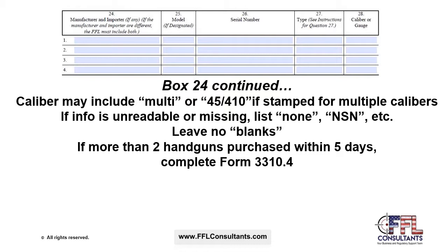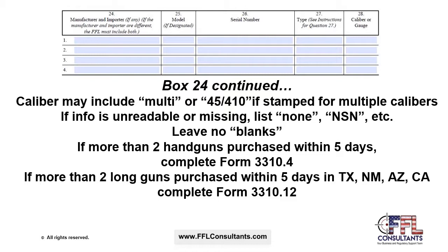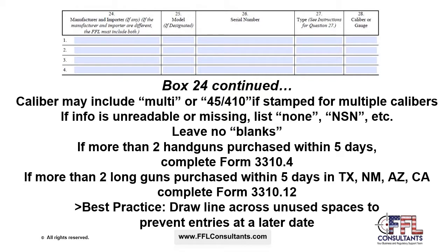If more than two handguns are being purchased across any five consecutive business days by the same individual, FFLs are required to complete Form 3310.4, the multiple transfer or sale of handguns. If any one individual is purchasing more than two long guns across any five consecutive business day period, and those long guns are sold in Texas, New Mexico, Arizona, or California and have a caliber higher than .22, a detachable magazine, and are semi-automatic, the FFL is required to fill out and submit Form 3310.12, the multiple sale or transfer of select long guns. A final best practice is to draw a line across any unused spaces to prevent entries by another employee at a later date.